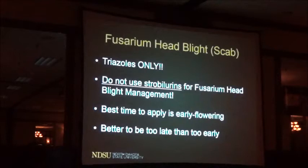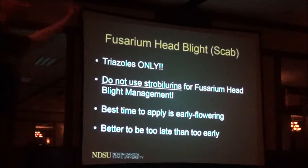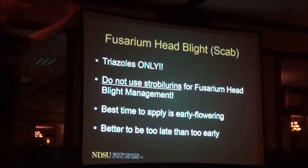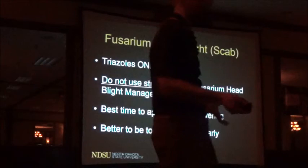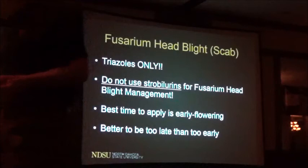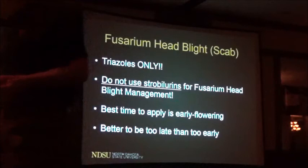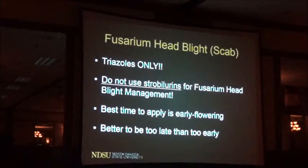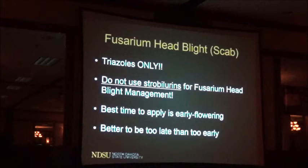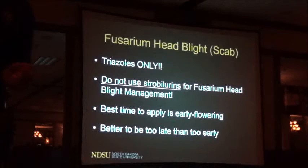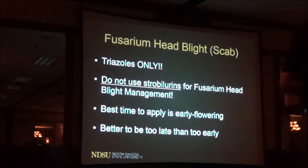The last topic is Fusarium head blight—wheat scab. Here's the condensed version: first, we only have one fungicide chemistry that works—triazoles only. That means Prosaro, Caramba, Folicure, and generics. Triazoles offer suppression but do not eliminate Fusarium head blight. Second, do not use strobilurins for Fusarium head blight management—Headline, Quadris, and even Quilt Xcel with two modes of action are not recommended. In some cases, strobilurin application to the head may actually increase DON levels. Focus entirely on triazoles for scab management.